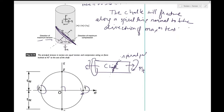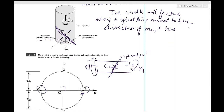The thin-walled cylinder under torsion will show buckling behavior along the direction of maximum compression, and the first crest which forms will be at an inclined angle of around 45 degrees — a spiral path similar to what we saw with the chalk.